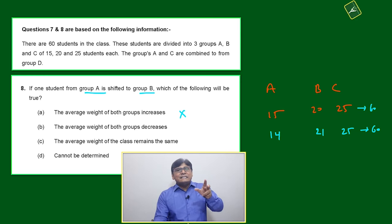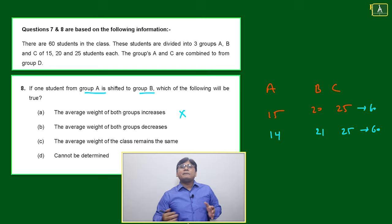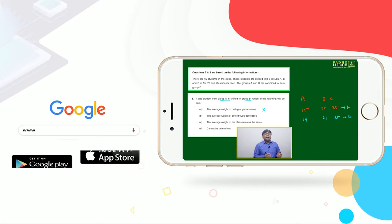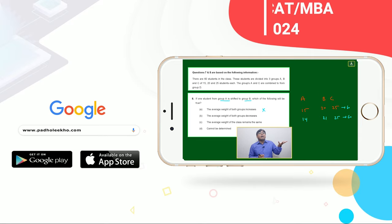Because we have seen if n is increasing or n is decreasing, both of the case average may go up, may go down. It depends on the value of the data, whether it's this side of average or that side of average. But here we don't have any information about the value of the data.